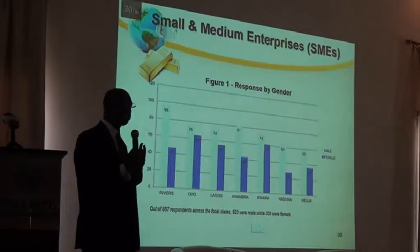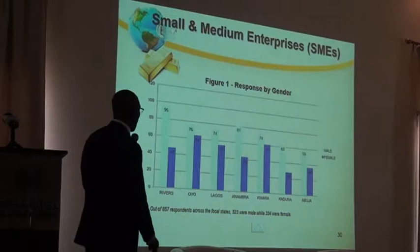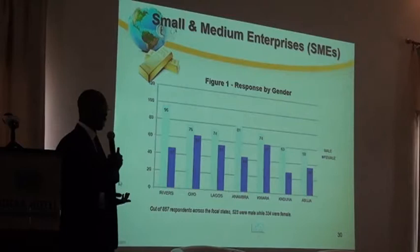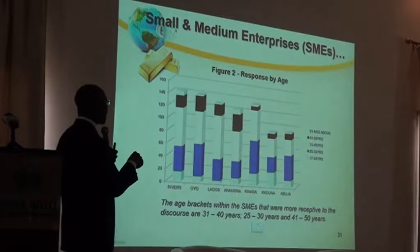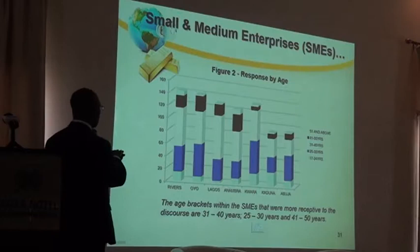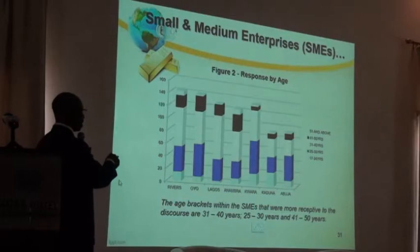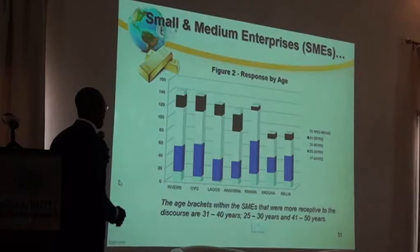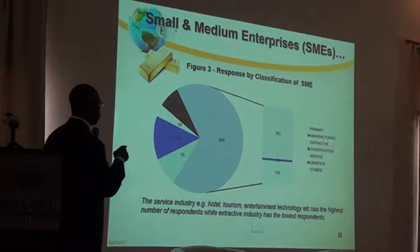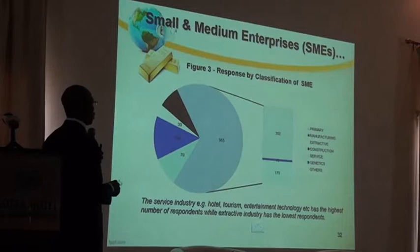Coming to analysis and findings in relation to SMEs and the education sector: out of 57 respondents across the focal states, 523 were male and 334 were female. By age, the bracket within SMEs most receptive to the discourse was 31 to 40 years, followed by 25 to 30 years, then 41 to 50 years. The service industry — hotel, tourism, entertainment, and technology — had the highest number of respondents, while the extractive industry had the lowest.